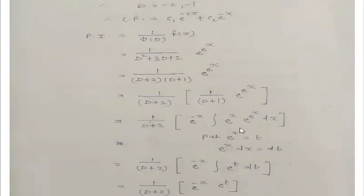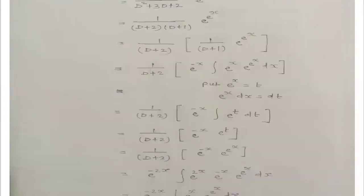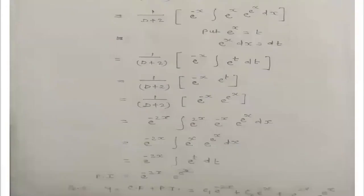To solve ∫e^x · e^(e^x) dx, use the substitution t = e^x, so e^x dx = dt. Then e^(−x) · ∫e^t dt = e^(−x) · e^t. Replacing t with e^x gives e^(−x) · e^(e^x). This is the new function after solving for the factor (D+1).